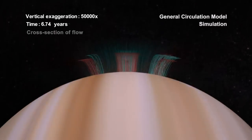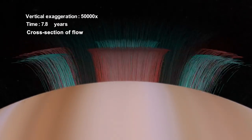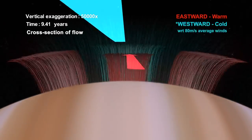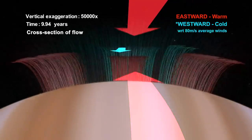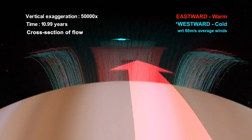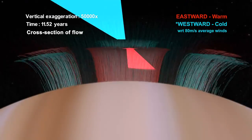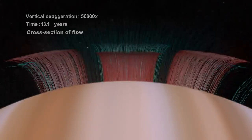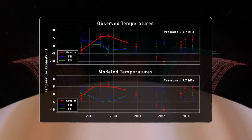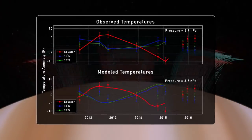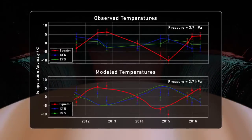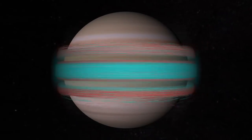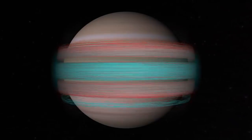The waves propagate upwards from the clouds and force the winds in the stratosphere to change direction, going from eastward to westward approximately every four years. Our model was able to reproduce the behavior of the QQO, but was also able to reproduce temperatures from the observations, and both of those together give us a lot of confidence that our model is very accurate in what's driving the QQO.